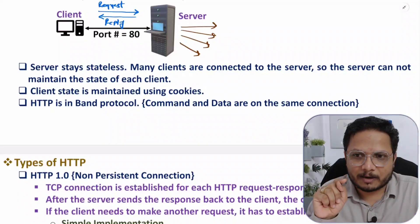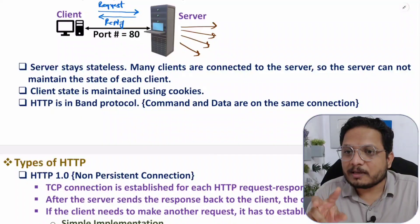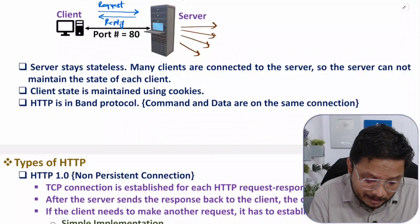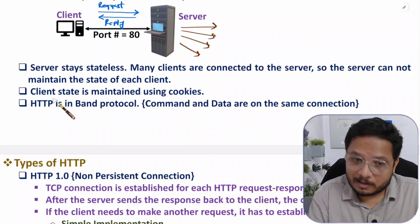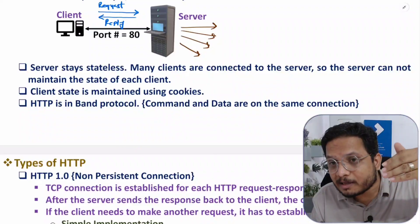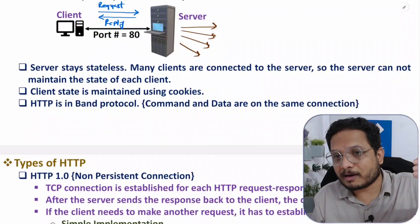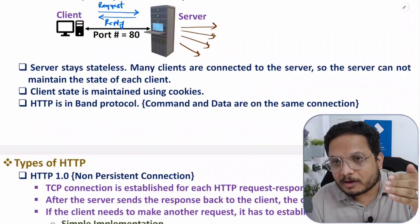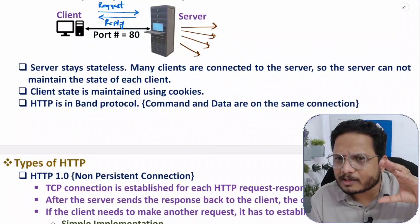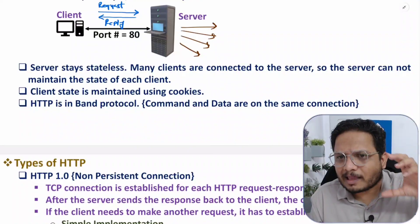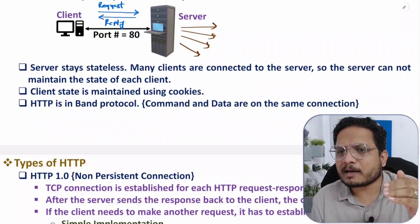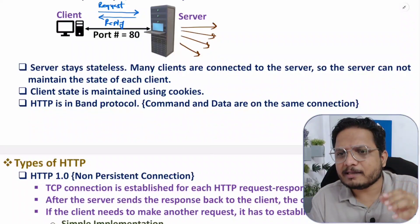Client state is maintained using cookies. Whenever you browse anything, cookies given by the server are stored in your computer's cache memory. Based on those cookies, your client maintains its state — so the client is stateful. The client has information about what state is there with the server, like whether the server is busy or what data was given in the last request.